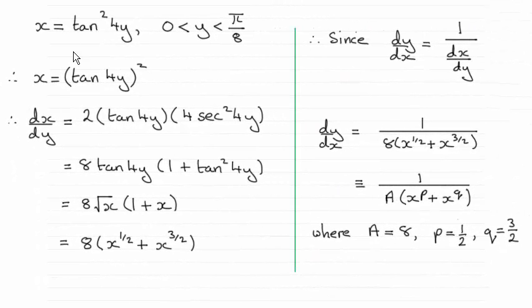Hi there. Now for this question, we were given that x equals tan squared 4y and asked to show that dy by dx reduced down to this particular form, quoting the values of a, p and q.